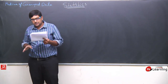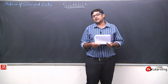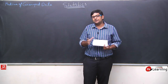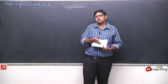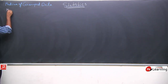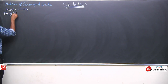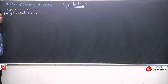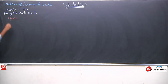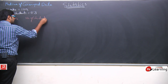Let us say there is a frequency distribution of marks obtained out of 100 by 53 students. In your class there are 53 students and we conducted an exam of 100 marks. The marks obtained by different students — the range of marks and the number of students corresponding to that range is given. So I will write here the data: marks and number of students.